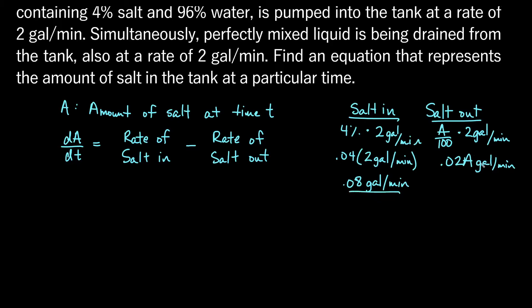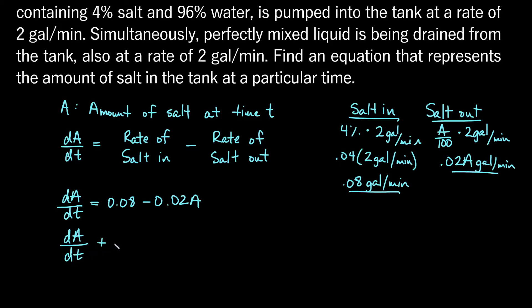Now let's plug in our rate of salt in and our rate of salt out into our equation. We get dA/dt is equal to 0.08 minus 0.02 times A. This is now a linear differential equation — it's not in normal form yet, but if we move the A term to the other side, we get dA/dt plus 0.02A equals 0.08. Now this is linear and in normal form, so we can find the integrating factor.